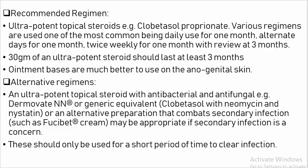30 grams of ultra-potent steroid should last at least three months. Bases are much better to use on the anogenital skin. Alternative regimen: Ultra-potent topical steroids with antibacterial and antifungal agents, for example Dermovate or generic equivalent clobetasol, with neomycin and nystatin, or alternative preparations that combat secondary infections such as fusidic acid cream, when infection is a concern. This should only be used for a short period of time to clear the infection.